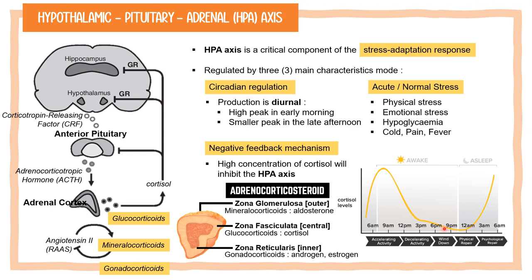Physical or emotional stress can also trigger cortisol production. Additionally, lack of glucose in the body — known as hypoglycemia, as mentioned in last week's lecture — as well as pain, fever, or cold, may also trigger cortisol production.